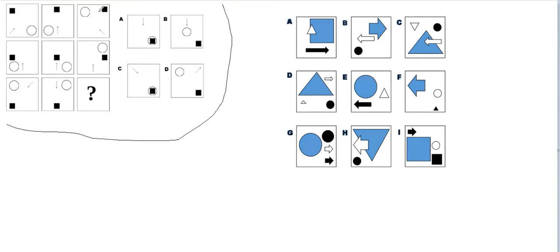We have black boxes and some circles. Let's see if there is some movement or change. The black box is here, then it moves here, then here, then here, then in the middle — so it should then move to the edge. It's like a clockwise or anti-clockwise movement of the black box. We know we should have a black box here, but the black box appears in all the shapes, so it doesn't narrow things down.